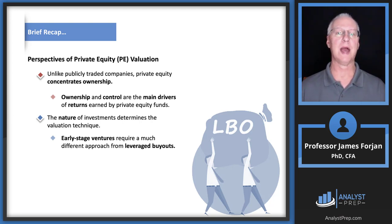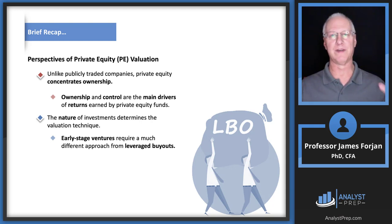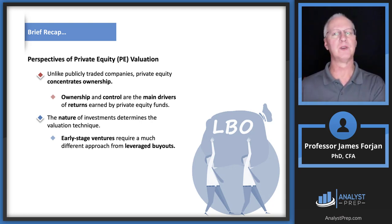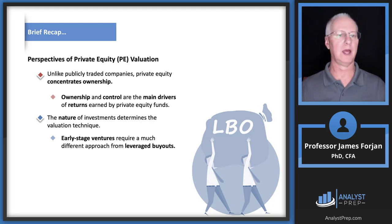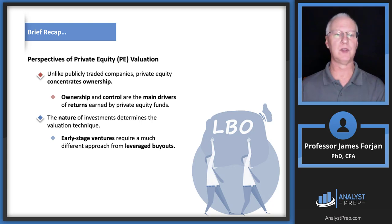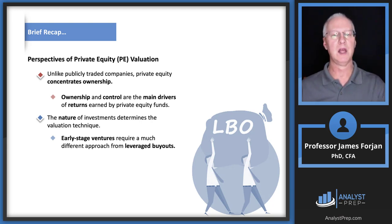Think of a huge company like Procter & Gamble or Johnson & Johnson with 10 billion outstanding shares. Large corporations are defined by their separation of ownership — all these shareholders — and control, which are the executives and financial managers who make capital budgeting and capital structure decisions. However, with private equity there's a concentration of ownership, which may lead to different kinds of decisions, especially given the massive amounts of leverage driving decision-making.